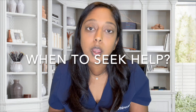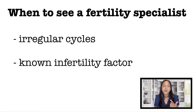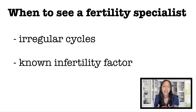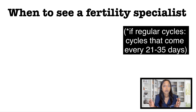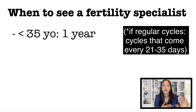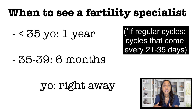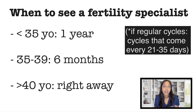The last thing to go over is knowing when to seek help. If cycles are irregular or there is already a known infertility factor — for example, a known male factor, known uterine factor, known tubal factor, endometriosis, or PCOS — you can go ahead and see us. If cycles are regular and you are under the age of 35 and have been unsuccessful for one year, it's recommended to see us. If you're between the ages of 35 and 39 and have been unsuccessful for six months, it's also recommended to see us. If you're over the age of 40, it's recommended to see us right away.